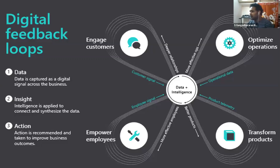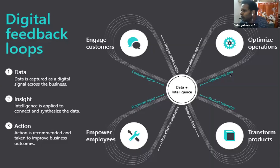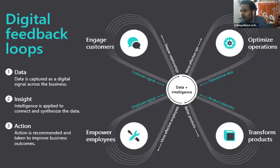We want to help manufacturing from the shop floor level to the enterprise level. Though we have a small double-digit team, we follow digital feedback loops. In any SME or manufacturing industry, there are four verticals: sales and marketing, operations, employees, and product development. If you collectively get information in digital format, you can analyze the data, get insights, and perform actions.